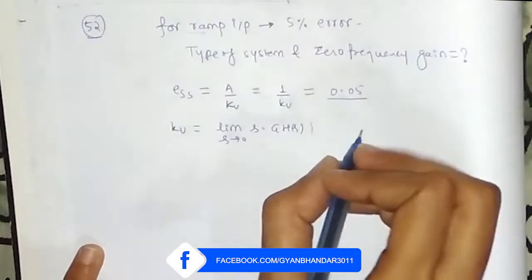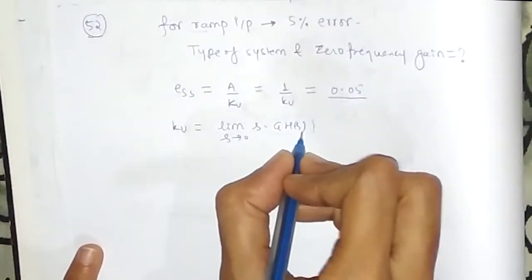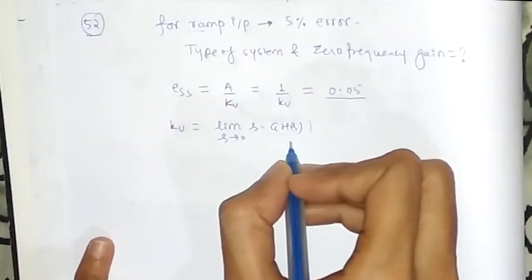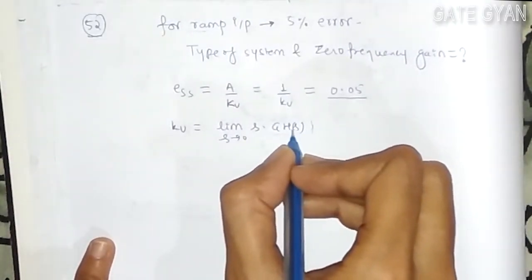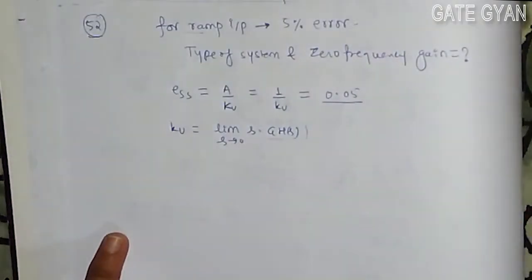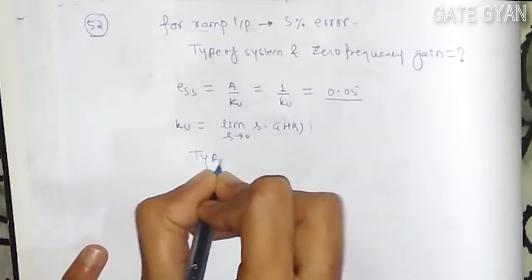So which implies that to get Kv finite there must be one pole at origin in this G(s)H(s). So type of the system is going to be 1.